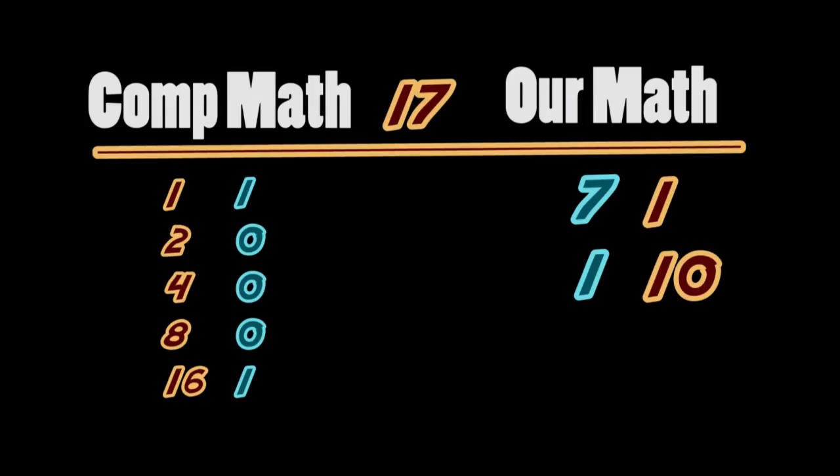So let's look at some simple numbers represented by our math and by computer math. Let's take 17. In our current system, that is 1 ten and 7 ones. In computer math, it would be 1 sixteen and 1 one. Or 1 0 0 0 1.